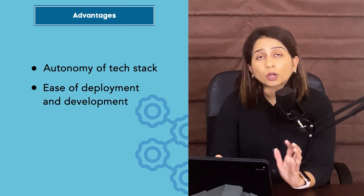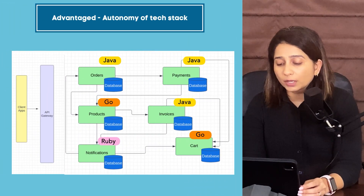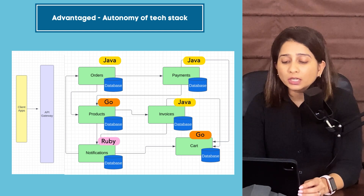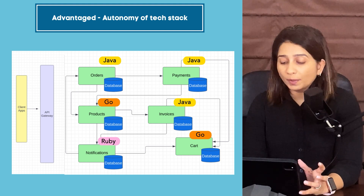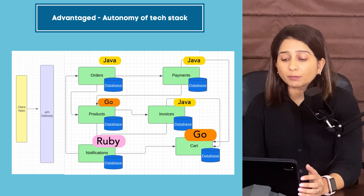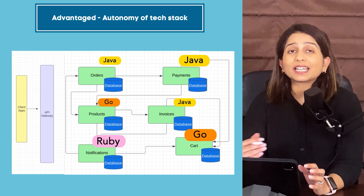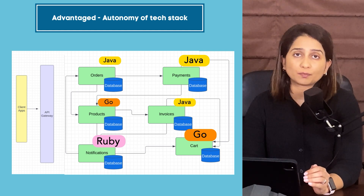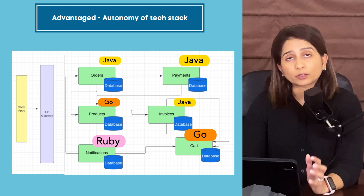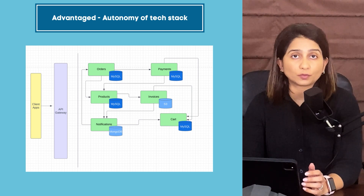Some key advantages of microservices include autonomy of tech stack, ease of deployment and development, reusability, and team performance. Teams are independent to choose which language best fits their service — Ruby for a notification service, Go for a lightweight cart service, or Java for a performance-intensive payments service. Depending on team skill sets and service requirements, the tech stack can vary across services. You also have independence to choose different databases per use case, enhancing performance and managing costs.